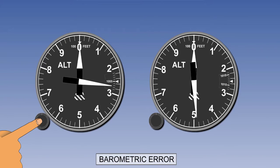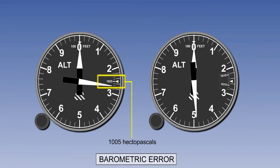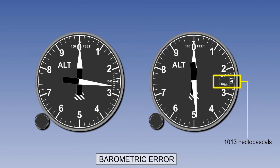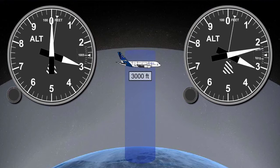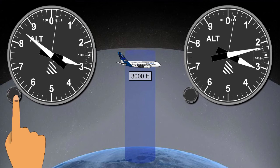Let's assume that the pressure at sea level is 1005 hectopascals. We can see that on the left altimeter the pressure setting of 1005 has been set, while on the right altimeter 1013 has been set. Notice that each altimeter is reading a vertical distance above its respective datum. As the aircraft climbs, the pressure setting in both altimeter subscales remains as originally set and the indications on the altimeters will therefore be relative to the pressure datums which have been set. If this datum pressure setting is incorrect there will be a barometric error.